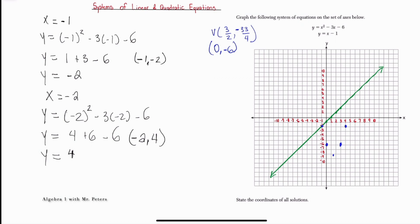So we could get more points, but because we see that there's two intersections, we could just connect these points for the parabola.